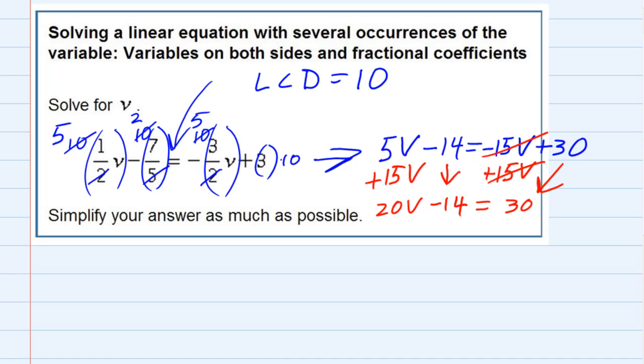On the left, 5v plus 15v gives me 20v. And I've still got to bring down that minus 14. So we only have one v now, and we just need to get it by itself. So again, I want to move the terms that don't have v's over to the other side. And the minus 14, I can move it over if I add 14. If I add it to the left, I have to also add it to the right, add 14. And those are like terms. So on the left, they cancel, leaving me with just 20v. On the right though, the 30 plus the 14 gives me a 44.